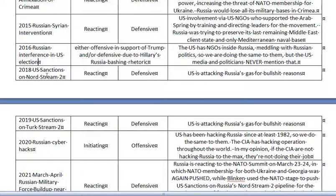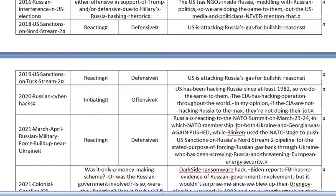2018 US sanctions on Nord Stream 2: Russia is reacting, Russia is defensive — the US is attacking Russia's gas for bogus reasons. 2019 US sanctions on TurkStream 2 pipeline: Russia is reacting, Russia is defensive — the US is attacking Russia's gas again for bogus reasons. They're just trying to jack Russia again and get Russia to react.